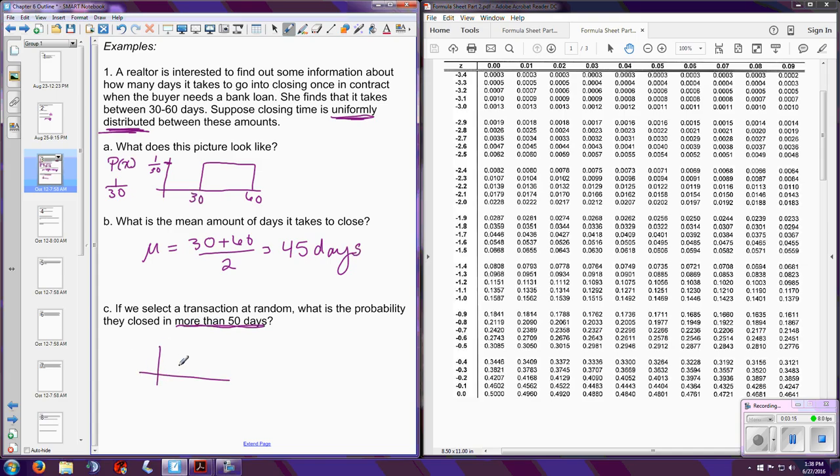Now, if you wanted to get a little bit more specific and pick, let's say, more than a certain amount of days between a certain number of days, you can also find the probability of that. If they're asking us here, more than 50 days, what's the probability it takes more than 50 days to close? Well, think again about that picture, right? If we look at where 50 falls on the picture, it's right about there. More than 50 is anything from 50 up to 60. We can't exceed 60 because they said this was only uniformly distributed from 30 to 60 days.